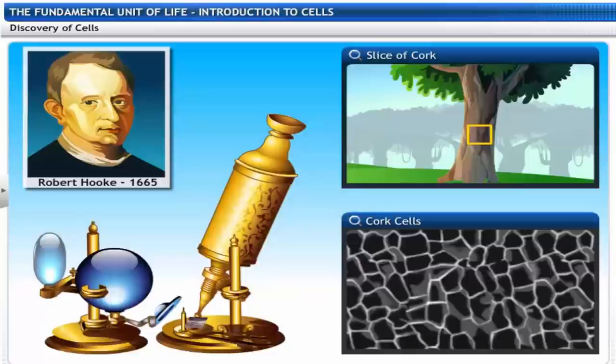Hooke actually saw only the outer cell walls because cork cells are not alive.